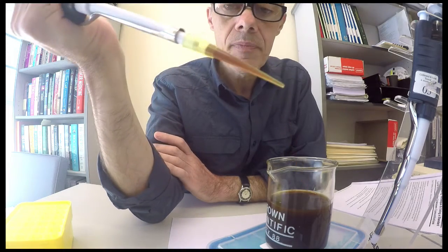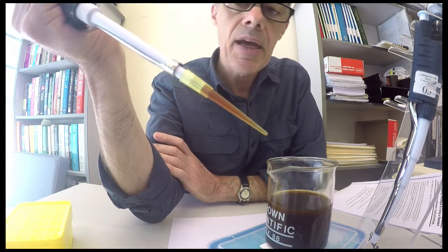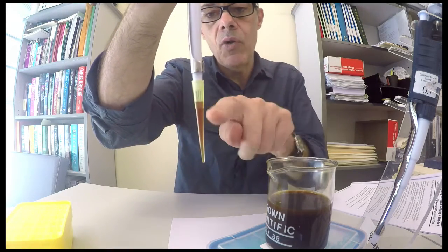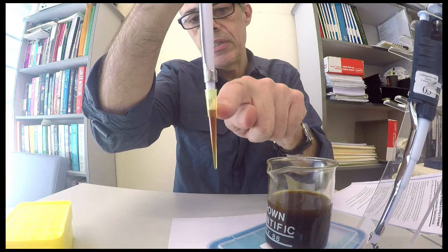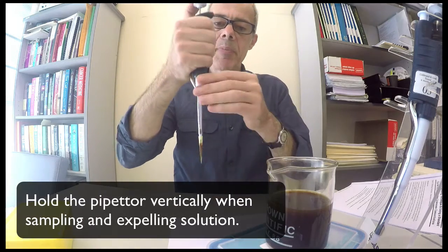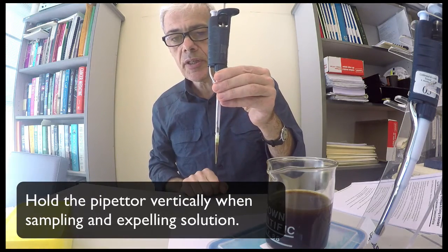And if you look here you'll see quite clearly that we have a volume of 180 microliters in here. Keep the pipette in the vertical orientation when you're doing this.